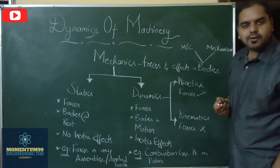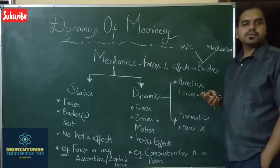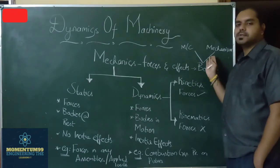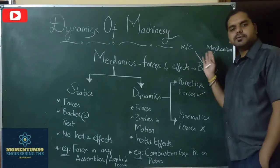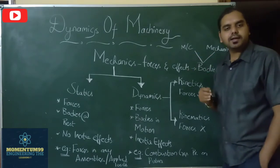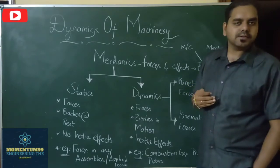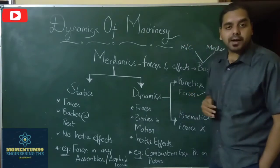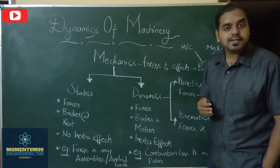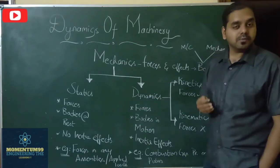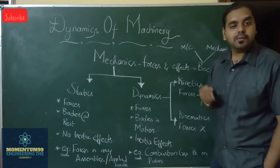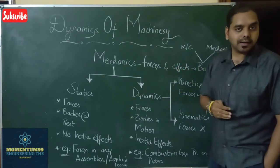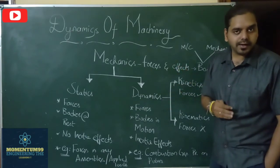When we speak about bodies, there are two types of bodies considered during analysis: either mechanisms or machines. In both these mechanisms or machines, they will have a combination of any number of links or parts. These links or parts will have motion called relative motion — defined as the study of motion of one part or link with respect to another part or link.